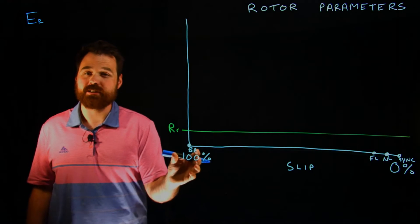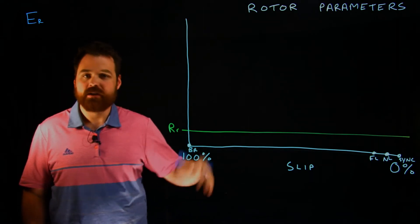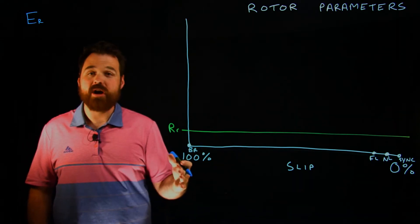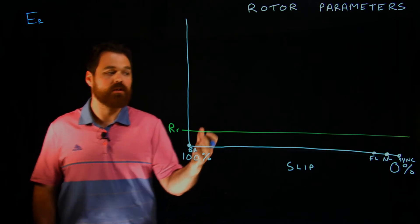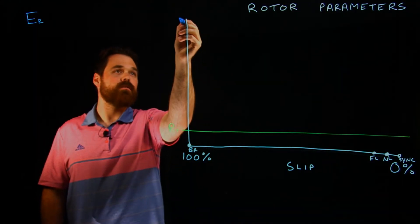So here at 100% slip, my stator spinning at whatever it is, my rotor is not moving, that is a lot of relative motion. So my voltage is going to follow a trajectory.